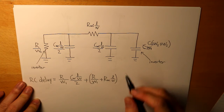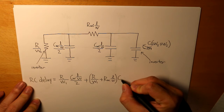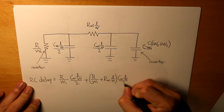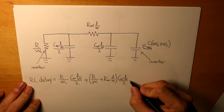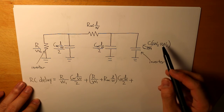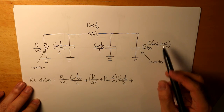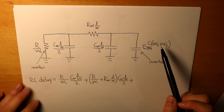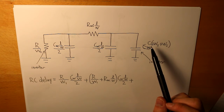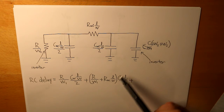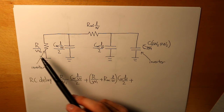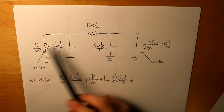We take the sum of those resistances and multiply by the second capacitance. Then we do the same for the remaining capacitances — for each capacitance we find the RC delay by taking the sum of all preceding resistances and multiplying by that capacitance.